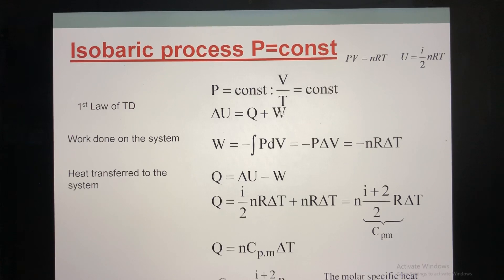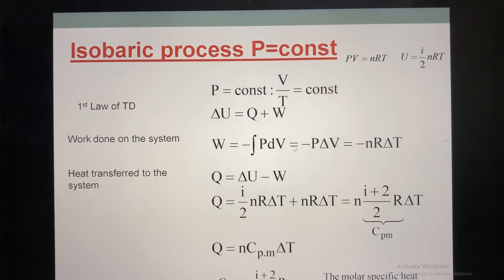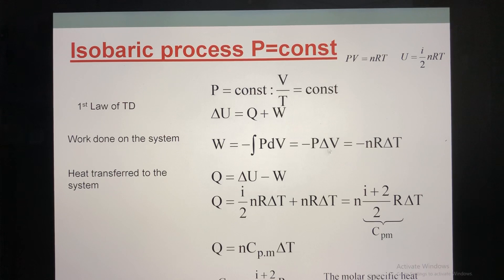Next, how to calculate the work? Remember the formula of the work done on the system. From here, because P is a constant, you can move P out from the sign of integration. So inside you just have dV. The integration of dV is V. When you substitute the final V and initial V, you have delta V, the change of volume. So if P is constant, from this formula, if you don't have information to apply this formula, you have another formula.